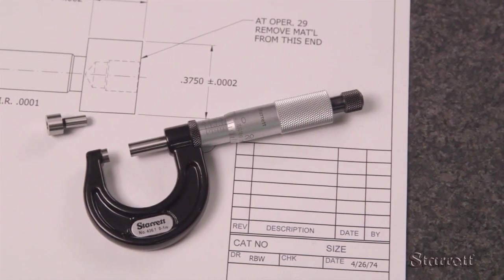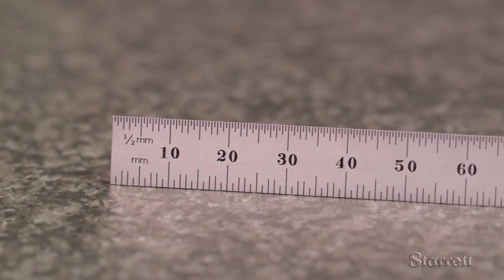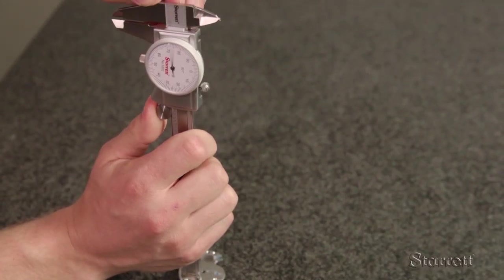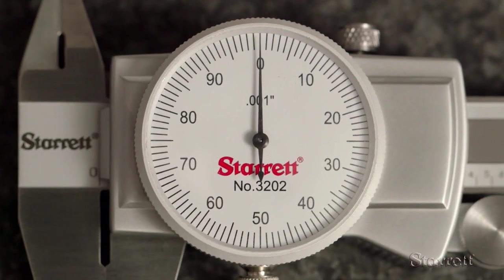For very precise measurements, you should use a micrometer, and for larger tolerances, a rule can work well. But when the tolerance is within 2 or 3 thousandths of an inch, a dial caliper is usually the best tool for the job.